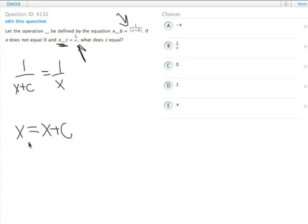The only way x can equal x plus c - you can subtract an x from both sides - c equals 0. Or you could just look at this original thing and say the only way this fraction could stay 1 over x is if c itself equals 0. So that's what it does: c equals 0, answer choice C.